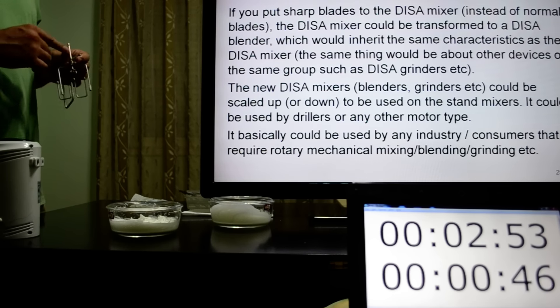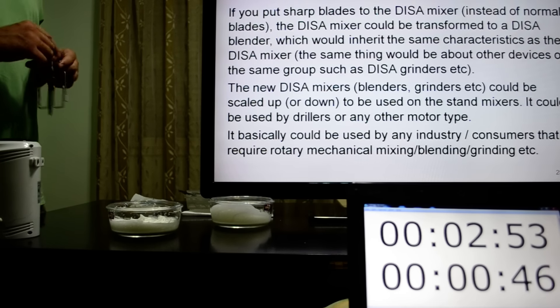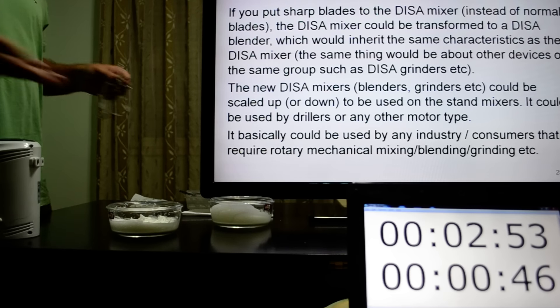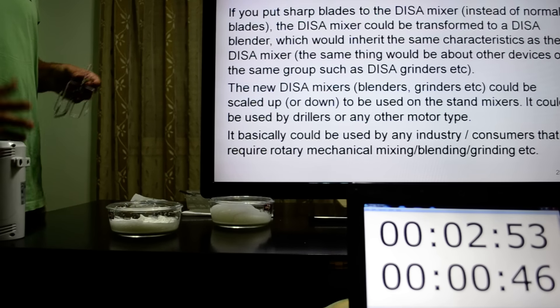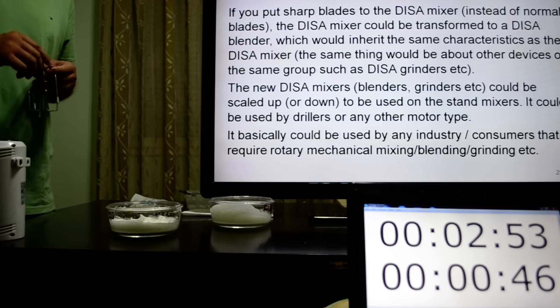The new DISA mixer, blenders, grinders, etc. could be scaled up or down to be used on stand mixers, for example. It could be used by drills or any other motor types. It basically could be used by any industry, consumers that require rotary mechanical mixing, blending, grinding, etc.